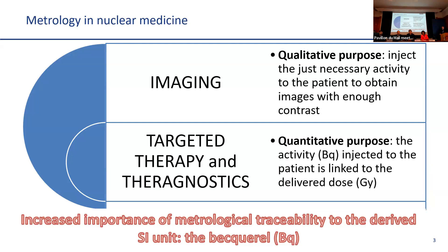If we move now to targeted therapy and diagnostics, here the activity injected to the patient is directly linked to the dose delivered to the patient tumor and metastasis. So maybe if in the future we would like to move to dosimetry, the activity could become an input quantity which could be used to plan treatment. So it's a more quantitative purpose that imposes more stress on the trust we should have on the activity measurement and on the whole traceability chain to the SI unit.